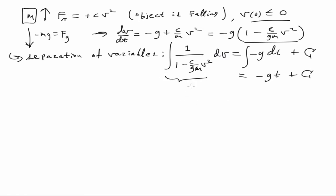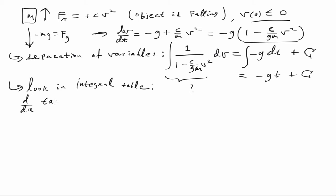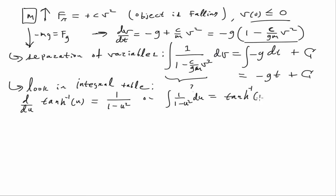To evaluate the left-hand side we look up a table of integrals. What we find is that the derivative of inverse hyperbolic tangent of u is 1 over 1 minus u², or equivalently the integral of 1 over 1 minus u² du equals the inverse hyperbolic tangent of u plus a constant.